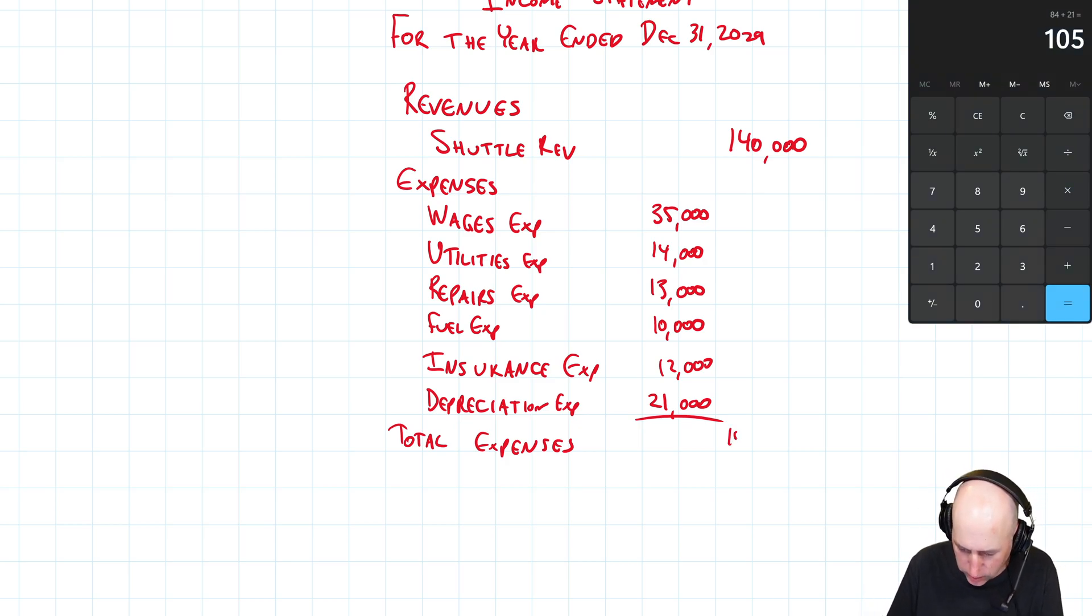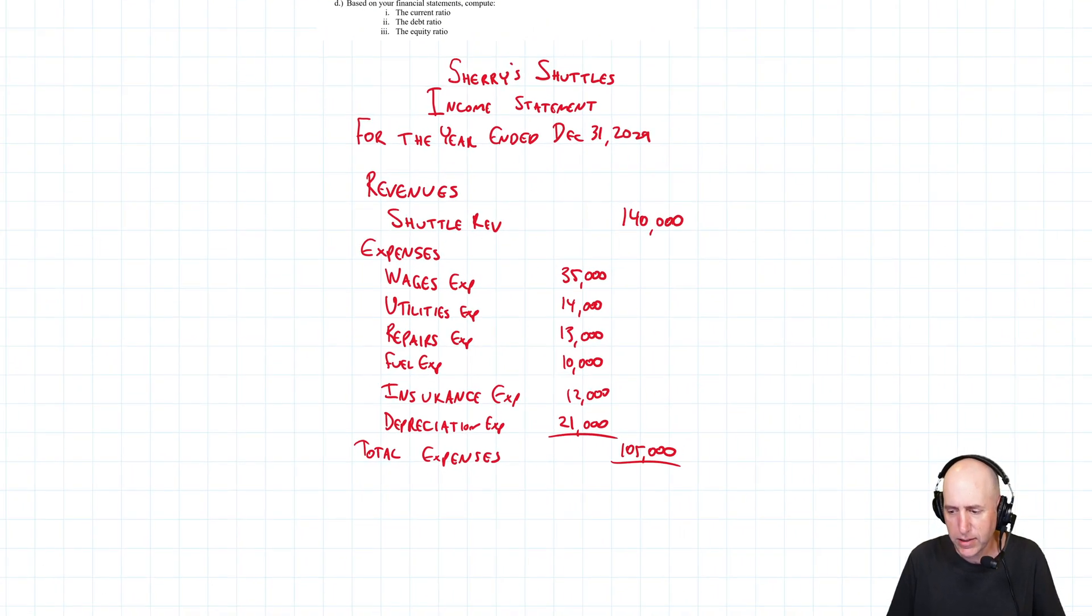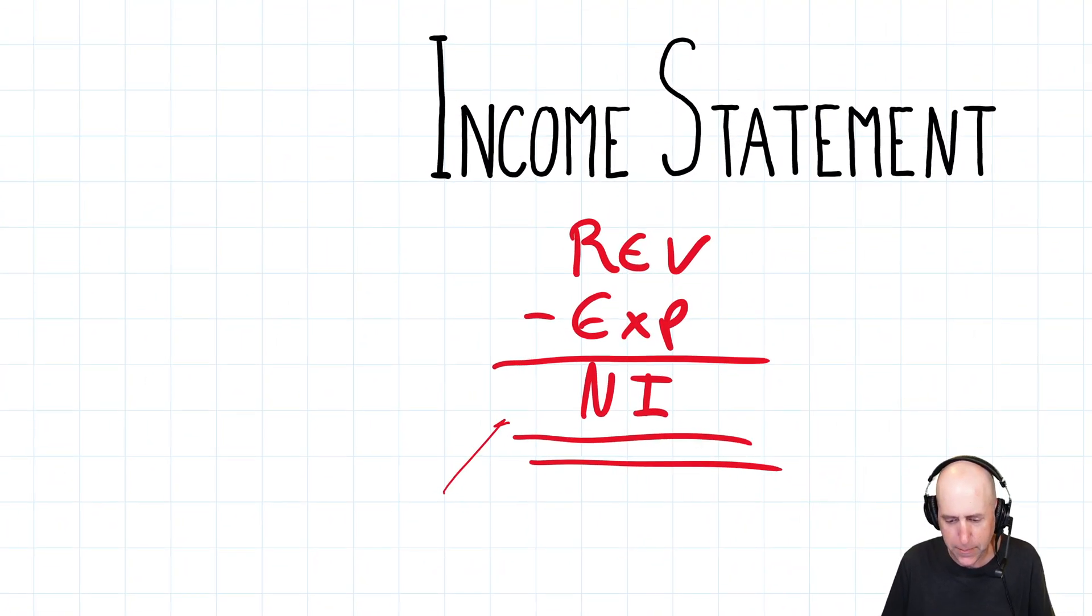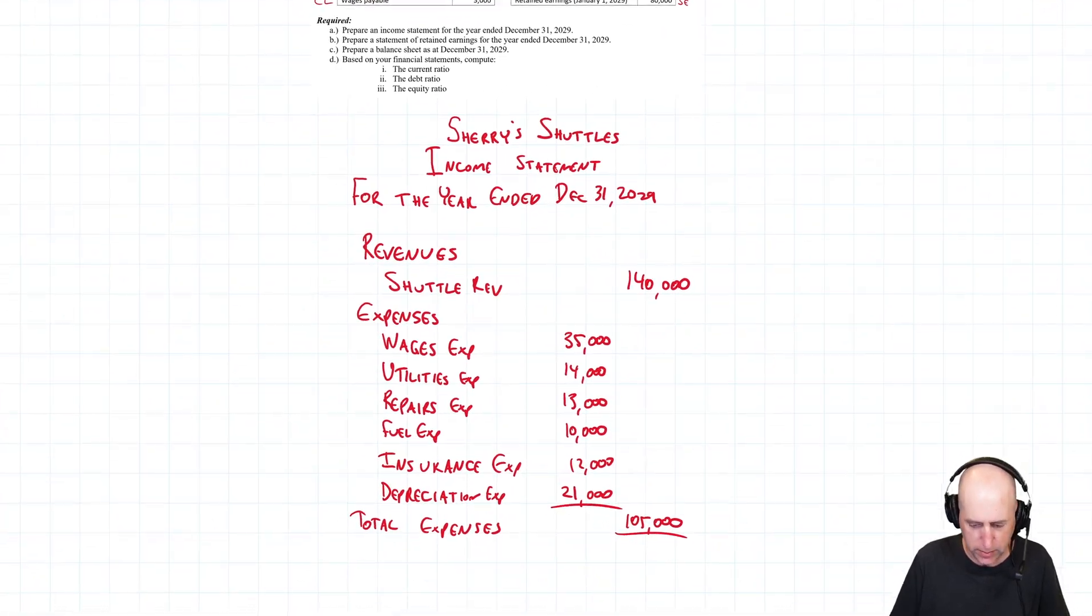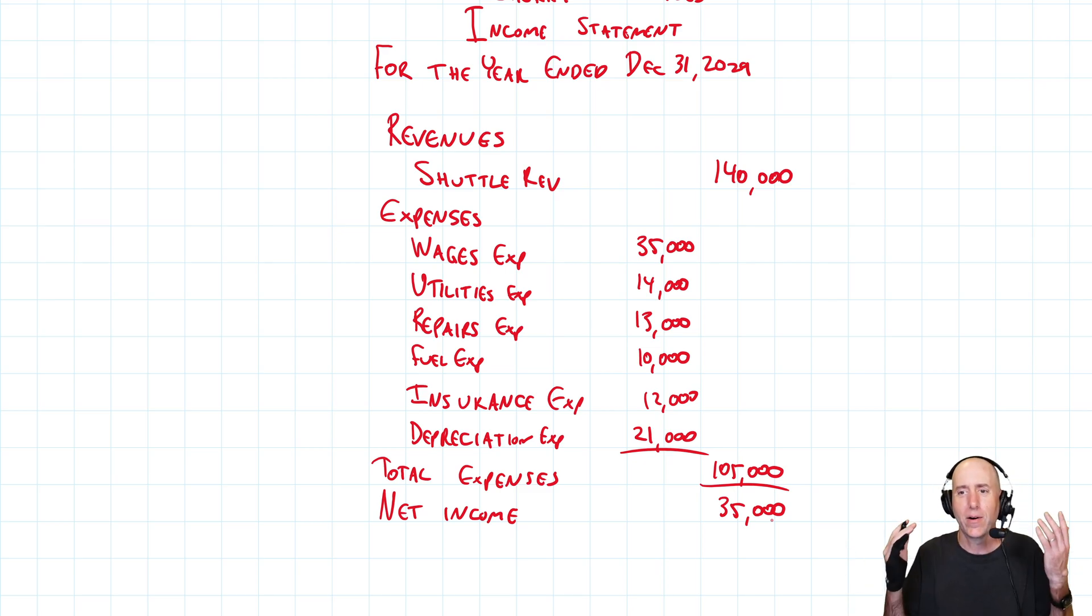Okay, so we've listed our expenses. We're going to need our total expenses, which I do not know the number. I need a calculator here. Thirty five plus fourteen plus thirteen plus ten plus twelve plus twenty one. One hundred five thousand dollars is my total expenses. So revenues minus expenses equals net income. Did I make any money? Well, I can see I made some money. How do I know I made some money? Well, one forty is my revenue. One oh five is my expenses. I made a profit. I made net income of one forty minus one oh five. What is that? Thirty five thousand dollars. Hooray.